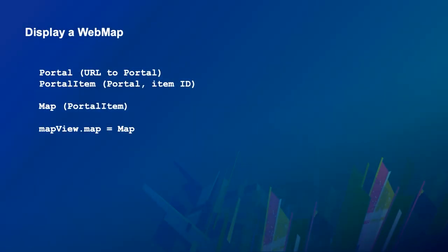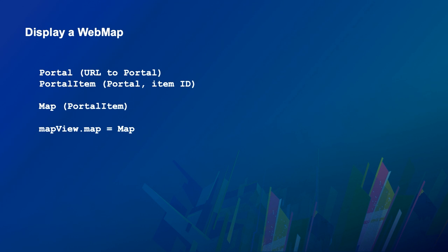So the code Nick showed: first, get a connection to your portal — Online or Enterprise — just use the URL. Then access the individual item in the portal, create a map by instantiating it from that item, and bind that map to the map view. The map view is bound to one map at a time. If you want to work with multiple maps, you can swap out the map in the map view or have multiple map views in your user interface, each looking at separate maps.